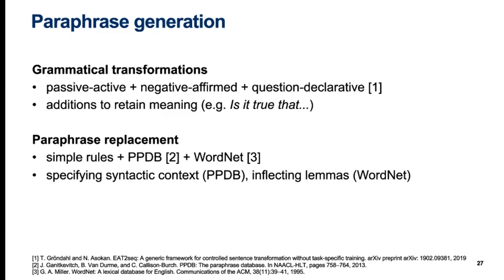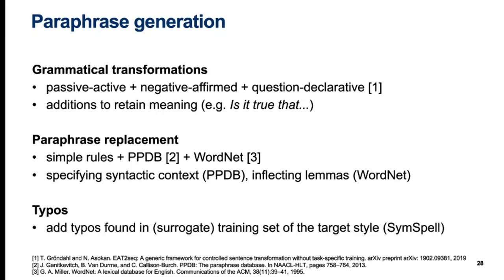To further increase the readability of the output, we filter out ungrammatical output from PPDB by syntactic context information and use a corpus-based technique for inflecting originally uninflected lemmas from WordNet. For typos, we go through the target style examples of the original training set and gather a dictionary from correctly spelled words to their possible misspellings via SimSpell in that corpus.